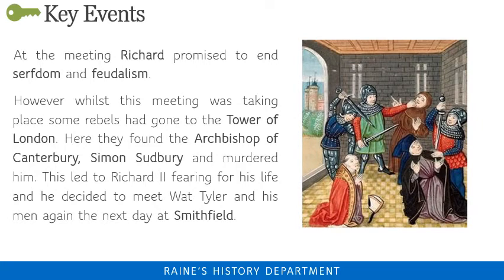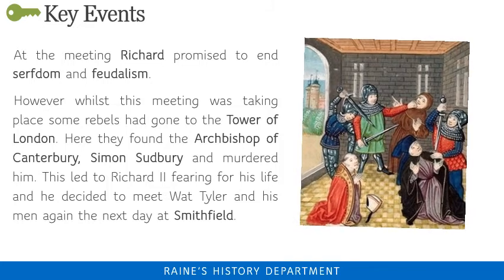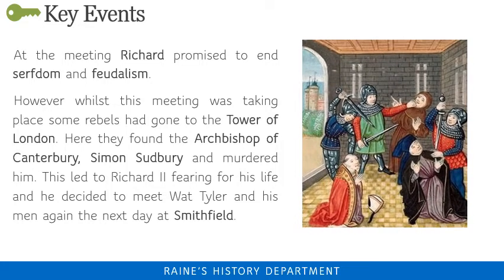At the meeting, Richard promised to end serfdom and feudalism. However, whilst this meeting was taking place, some rebels had gone to the Tower of London. Here they found the Archbishop of Canterbury, Simon Sudbury, and they murdered him. This led to Richard II fearing for his life once more, and he decided to meet Wat Tyler and his men again the next day at Smithfield.